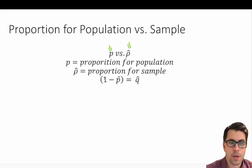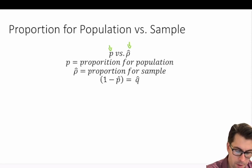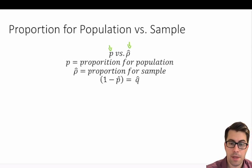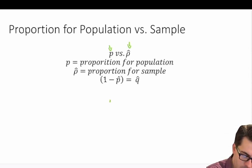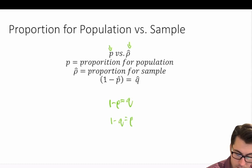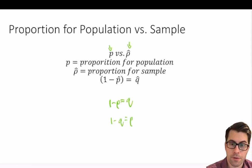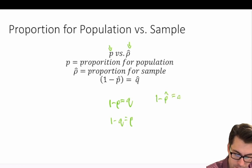Similar to when we were working with binomials and we had p and q, when we're working with the proportion of our sample or proportion of our population, p and q have a complementary relationship: one minus p is equal to q, and one minus q is equal to p. Same thing for the proportion of our sample — one minus p-hat is equal to q-hat, and one minus q-hat is equal to p-hat.